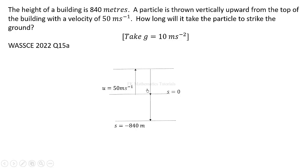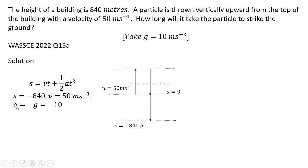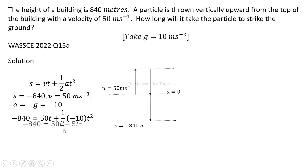With parameters s equal to negative 840 meters and u equal to 50 meters per second, we use the kinematic equation s equals ut plus half at squared. Taking g as 10 meters per second squared, acceleration a is negative 10 because the particle moves against gravity when thrown upward. Substituting gives a quadratic equation; simplifying, half of negative 10 gives negative 5.